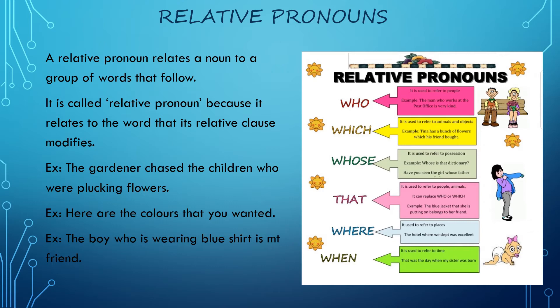For example: the gardener chased the children who were plucking flowers. If I divide the sentence into two, we get: the gardener chased the children, and they were plucking flowers. So we have connected these two sentences using the word who, and this is known as a relative pronoun.